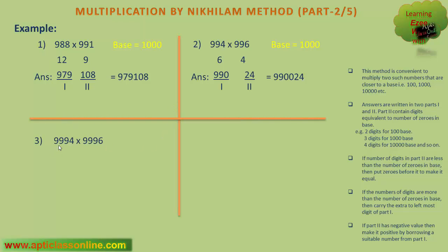Now the next example is 9994 into 9996. So what will be the base for this calculation? Both the numbers are closer to 10000. So the base is 10000. First we have to find out that 9994 is how much less than 10000? It is 6 less than 10000. And now 9996 is how much less than 10000? It is 4 less.